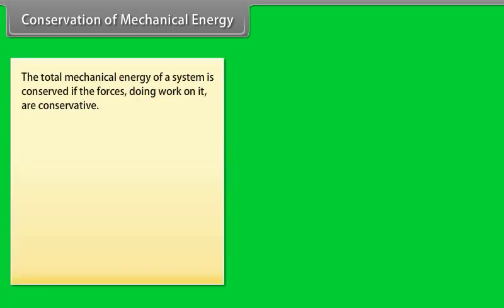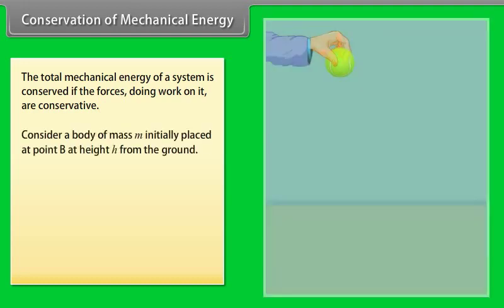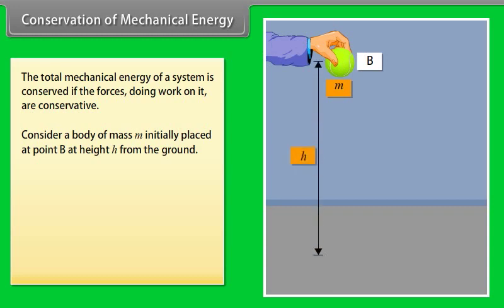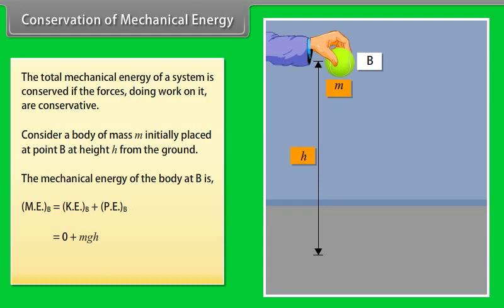Conservation of mechanical energy. The principle of conservation of total mechanical energy states that the total mechanical energy of a system is conserved if the forces doing work on it are conservative. Let us understand it with an example. Consider a body of mass m initially placed at point b at height h from the ground. The mechanical energy of the body at b is mechanical energy of the body at b equals kinetic energy of the body at b plus potential energy of a body at b equals zero plus mgh equals mgh.